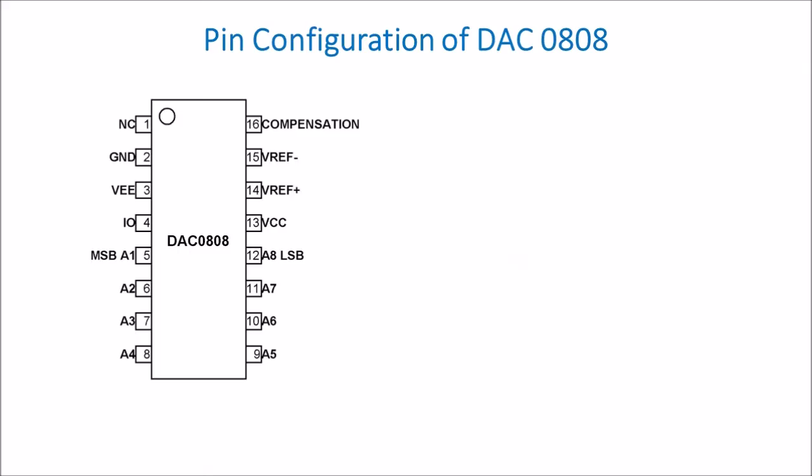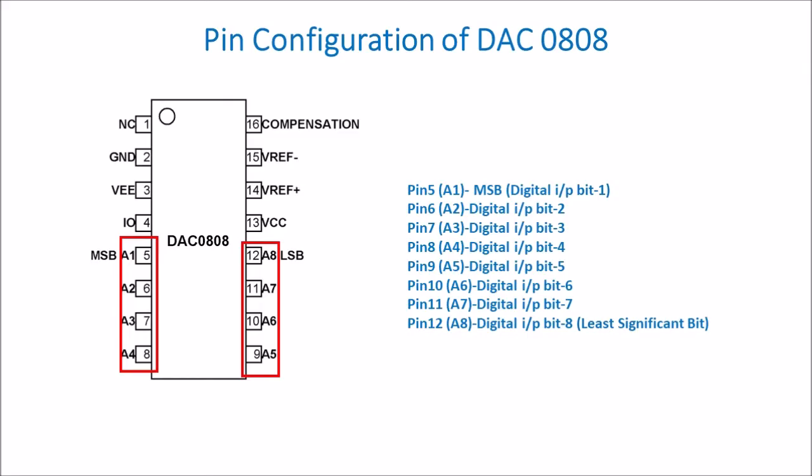Pin configuration of DAC 0808: it is an 8-bit DAC, so it has 8 digital input terminals. The digital input terminals are written as A1, A2, A3, A4, A5, A6, A7, and A8, where A1 is referred to as MSB and A8 is referred to as LSB. When we connect these terminals to microcontroller, they can be referred to as D0 to D7. Digital data from the microcontroller is given to this IC and the IC converts this digital data into an analog signal.